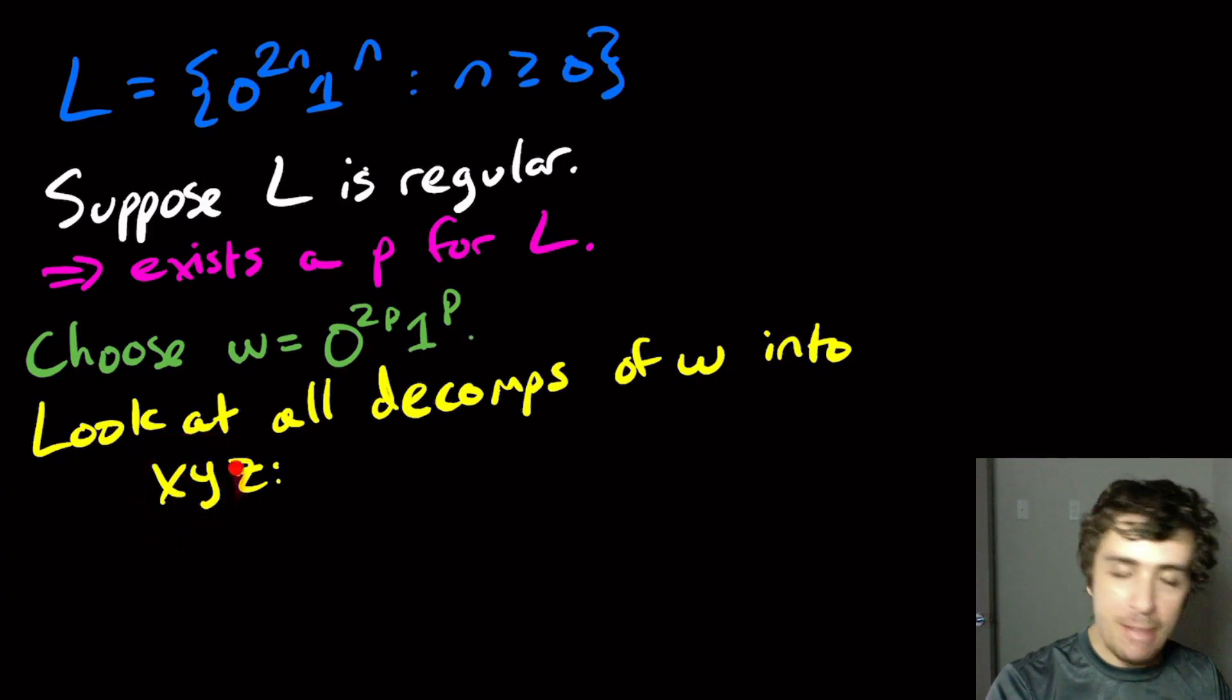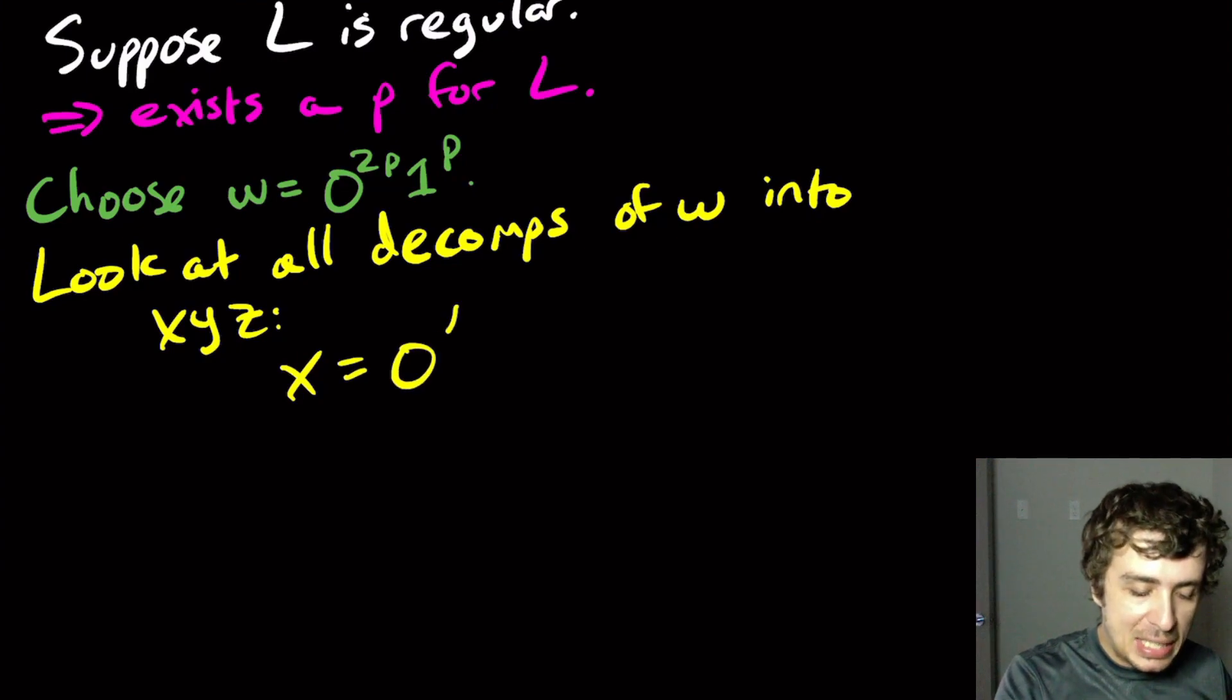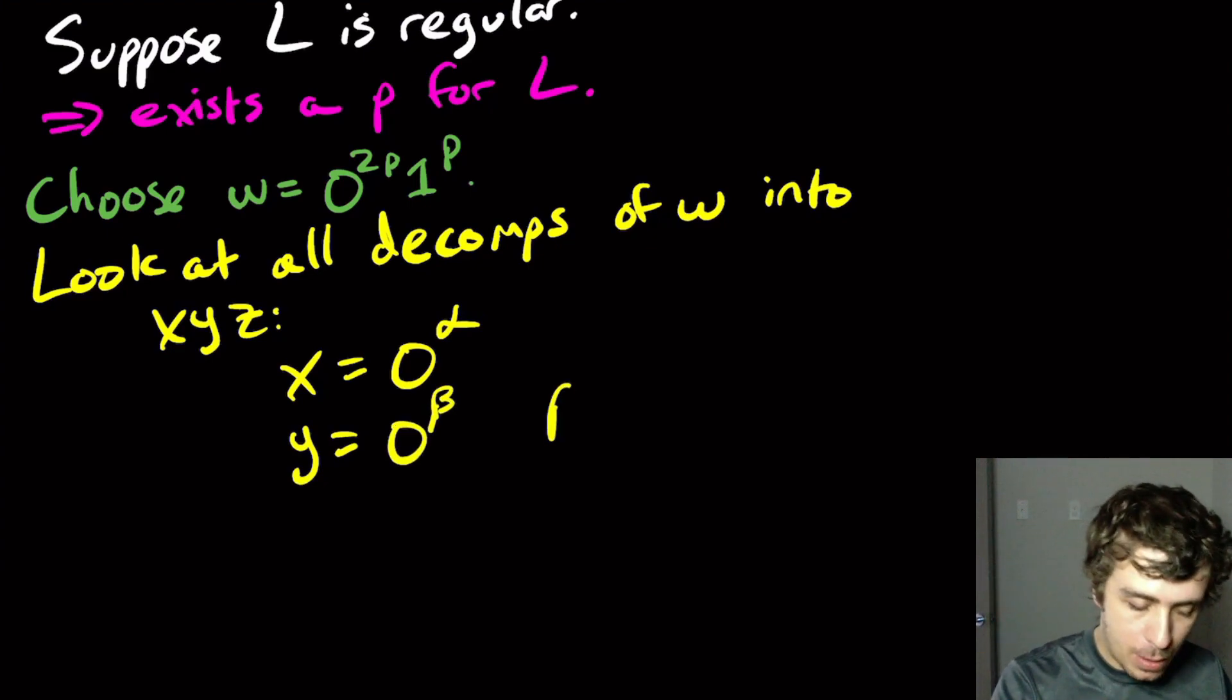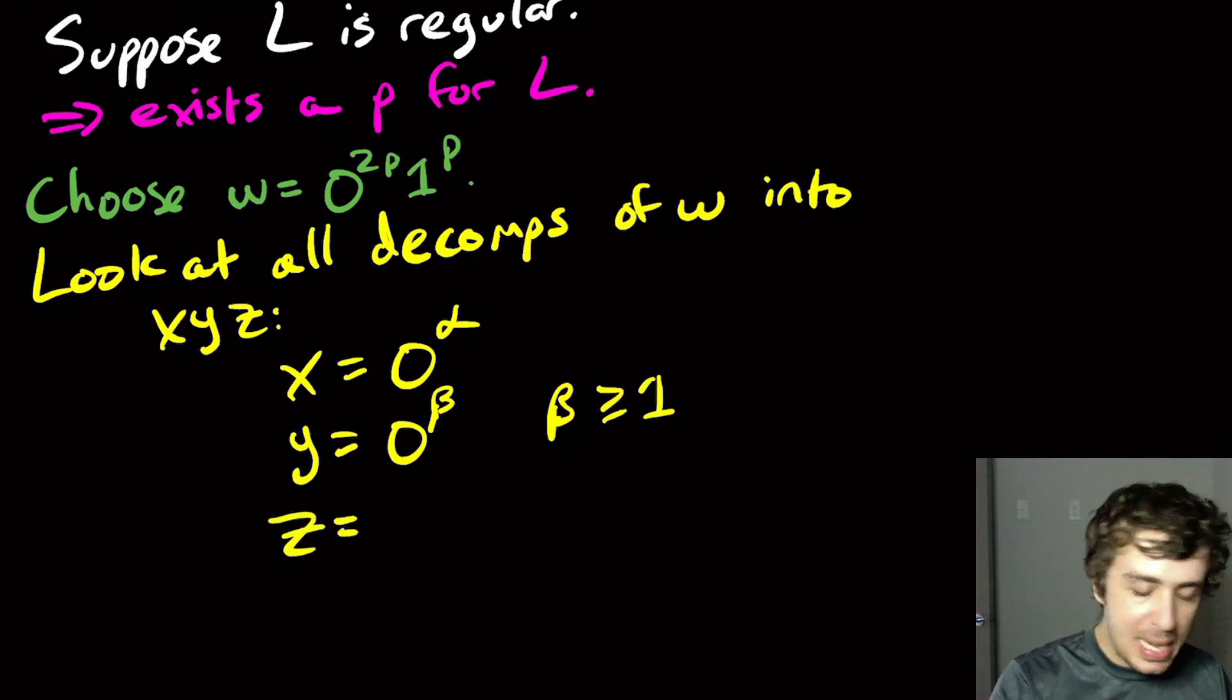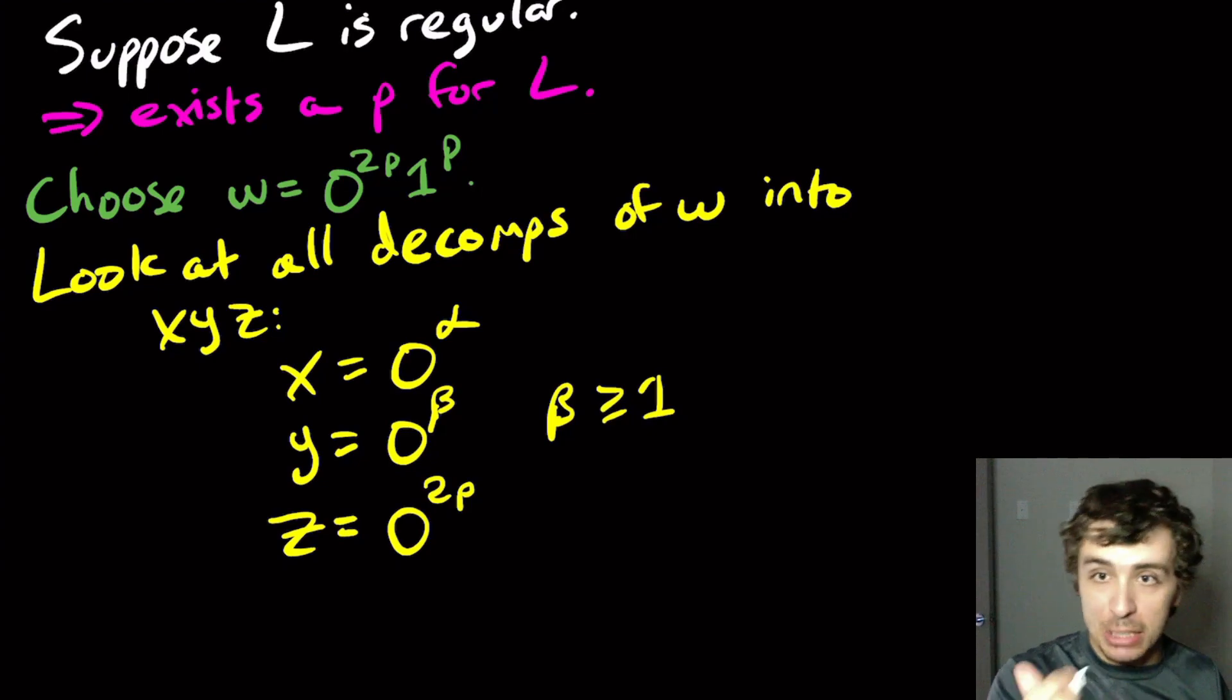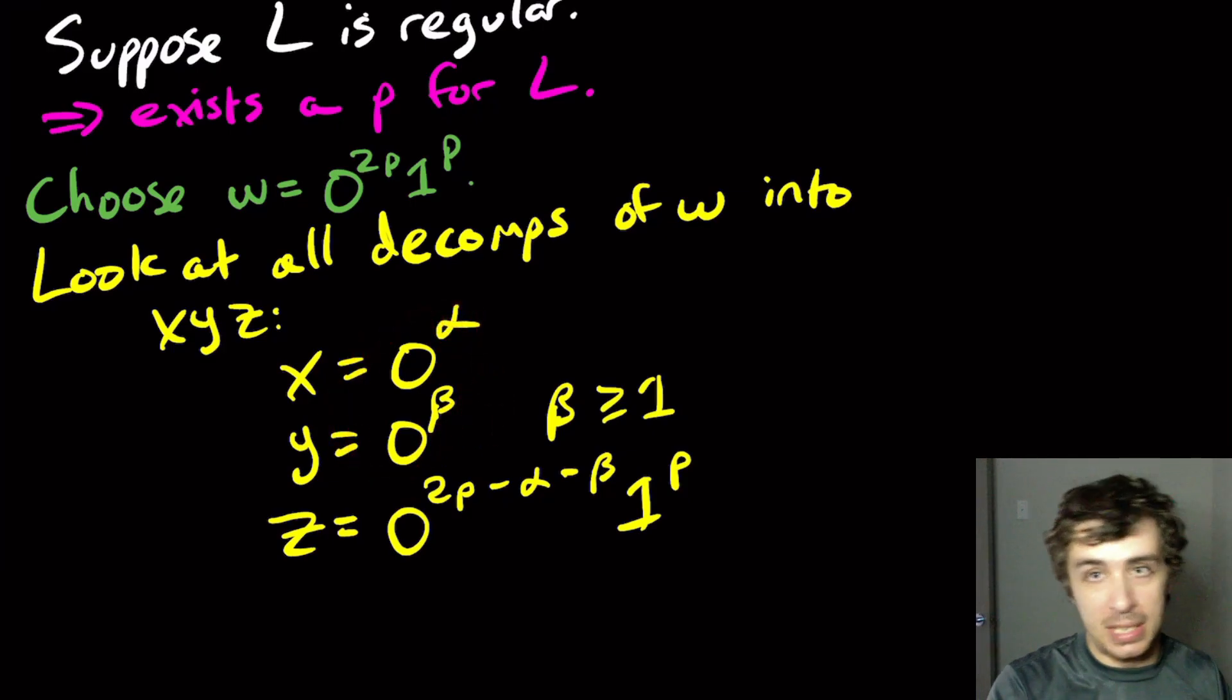Well, if x and y have at most p characters and they're the beginning of the string, they must entirely consist of zeros. And I don't know how many zeros they have. They have some number though. So let's just say x has alpha zeros in it. Y has, it could be a totally different number, let's call it beta. And we know beta is at least one because we know y is non-empty. And z is the rest of the string because there are only three parts. So we're going to have 0 to the 2p, because that's what we started with, minus alpha, because that's what the x part had, minus beta, because that's what the y part had. And we have all of the ones here because the first two pieces never touched the ones.